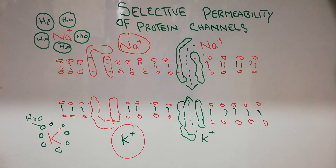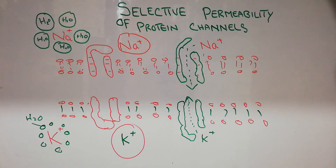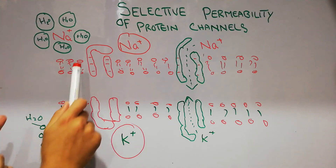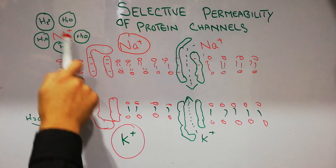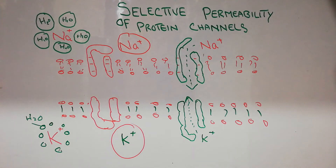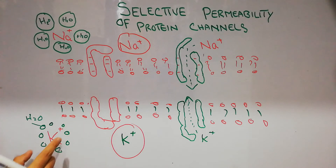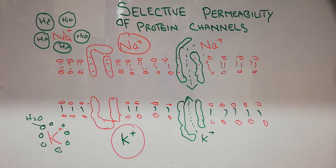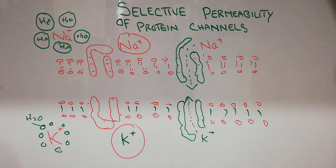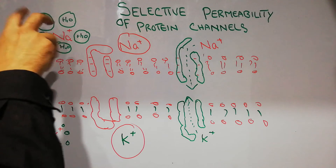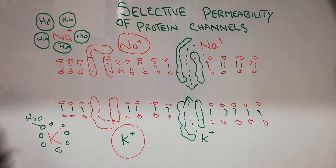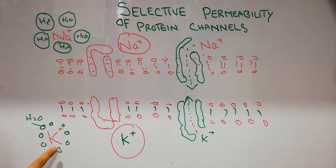The potassium channel is small in size, so it will allow potassium to pass through along with its water molecule, but it will not allow sodium to pass through along with its water molecule. The reason is that sodium is surrounded by larger water molecules, while potassium is surrounded by smaller water molecules.